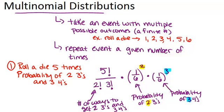Back to the original problem, rolling a die five times. The five times is where the five factorial came from. And getting the two threes and the three fours is again where the two and the three comes from down here.